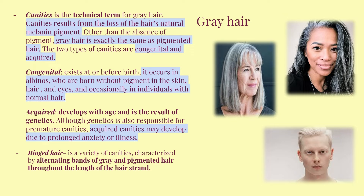Other than the absence of the pigment, gray hair is exactly the same as pigmented hair. The two types of canities are congenital and acquired. Congenital exists at or before birth. It occurs in albinos who are born without pigment in the skin, hair, eyes, and occasionally in individuals with normal hair.